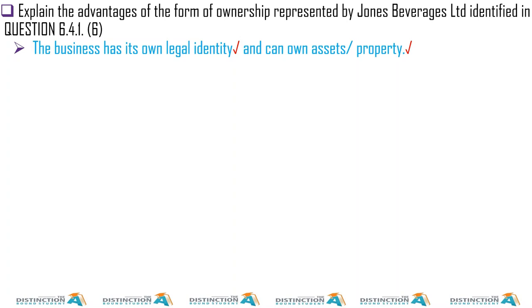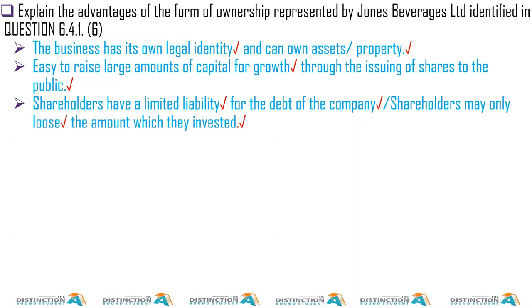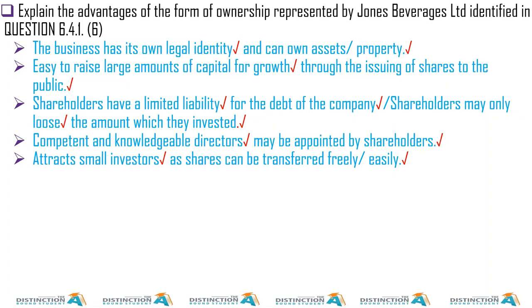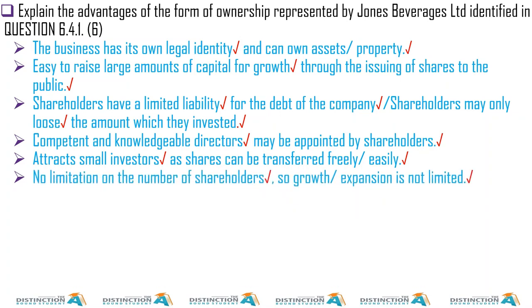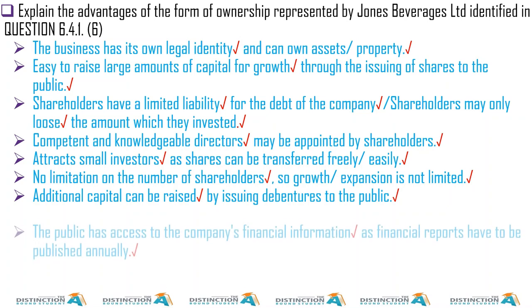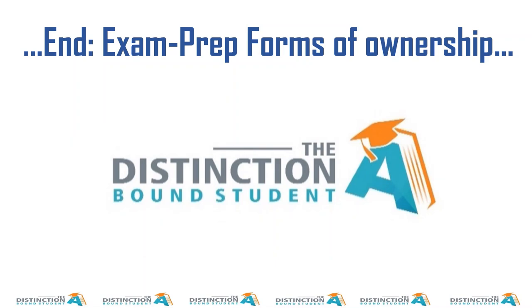Explain the advantages of the form of ownership represented by Jones Beverages Limited. Since the word 'Limited' tells us it's a public company, the advantages are: the business has its own legal identity and can own assets. It's easy to raise large sums of money through issuing shares to the general public. Shareholders have limited liability for the debts of the company — shareholders may only lose the amount which they invested. Competent and knowledgeable directors may be appointed by shareholders. It can attract small investors as shares can be transferred freely and easily.